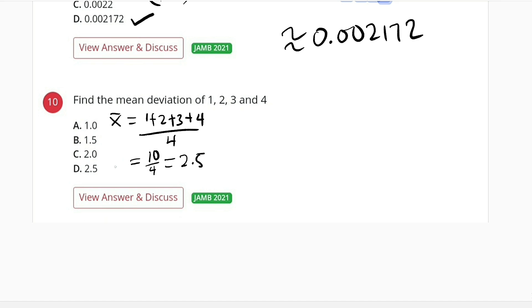Therefore, the mean x bar is equal to 2.5. And the mean deviation is the summation of x minus x bar divided by n. So let's do that. We take every single element here and subtract the mean.